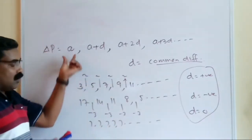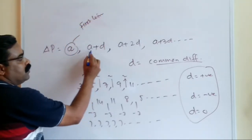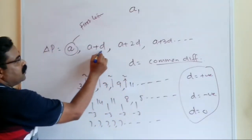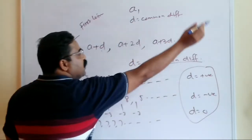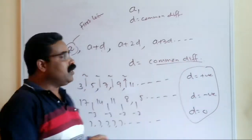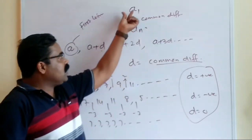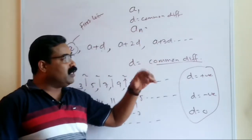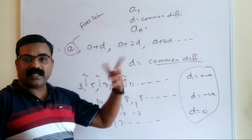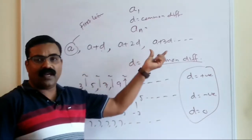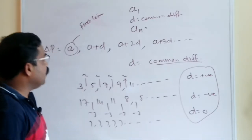'a' is called the first term, denoted as a₁. 'd' is the common difference. The terms are the first term, second term, third term, and so on. The nth term is denoted as aₙ. So a₁ is the first term, a₂ is the second term, a₃ the third, and aₙ is the nth term. Do not confuse n (number of terms) with aₙ (the nth term).